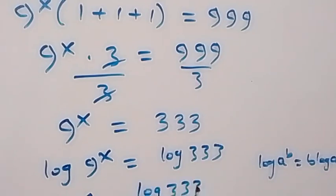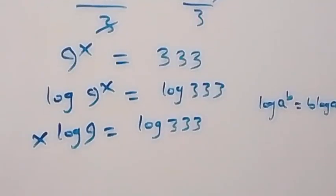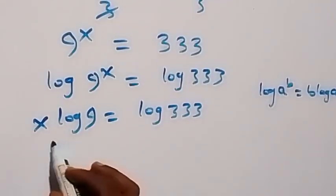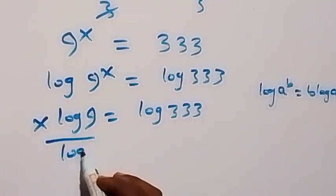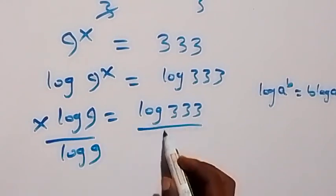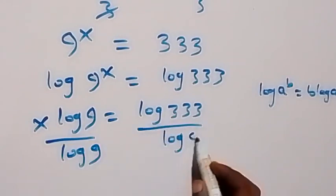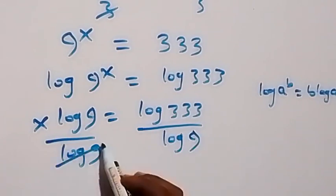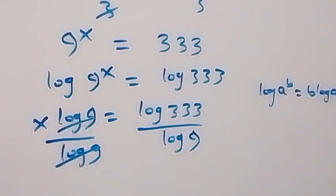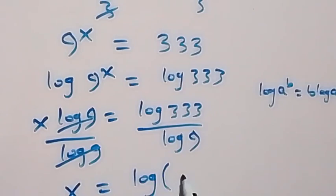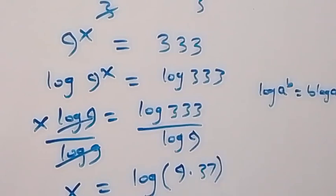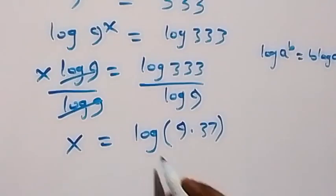Next, we divide both sides by log 9. On the left side, log 9 cancels log 9, and we can write x equals log(3.33) divided by log 9. We can separate 3.33 as 9 times 37, then divide by log 9.